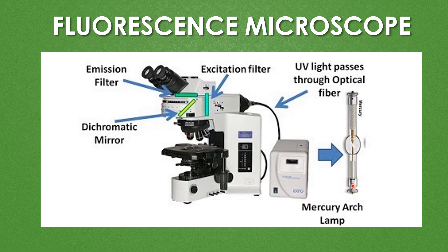The mercury arc lamp is the light source, and UV light passes through the optic fiber from it. This part is the exciter filter or excitation filter. This is the objective lens. This is the dichromatic mirror, which plays a major role in the fluorescence microscope. The next part is the emission filter, also called the barrier filter. And this is the eyepiece. These are all the common parts of the fluorescence microscope.